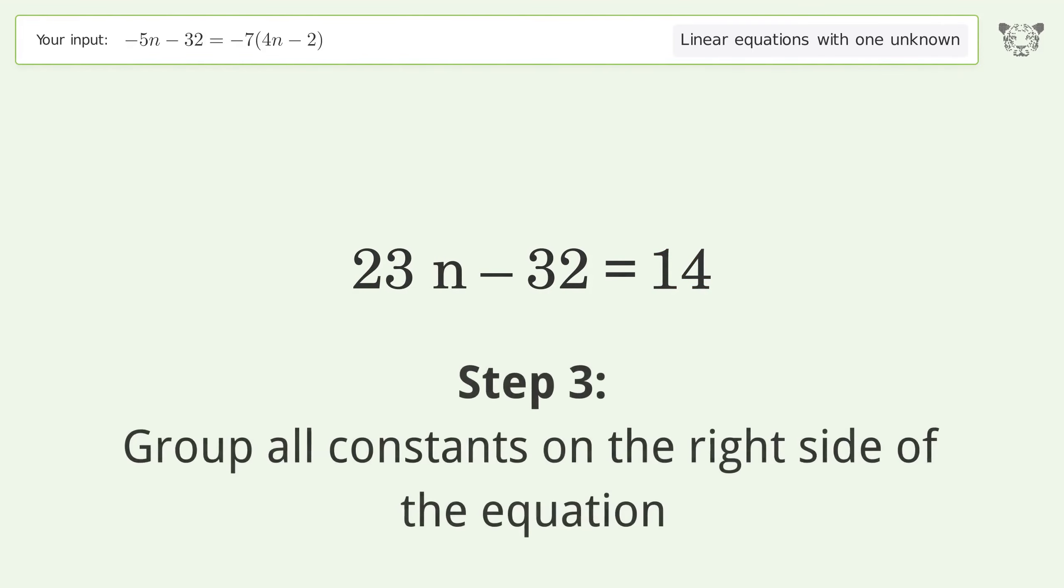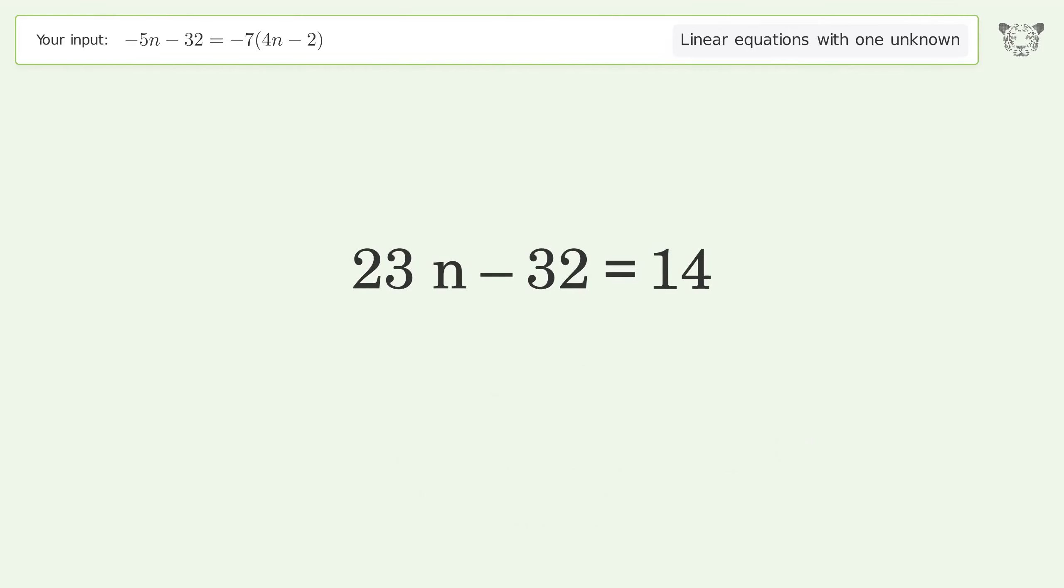Group all constants on the right side of the equation by adding 32 to both sides. Simplify the arithmetic.